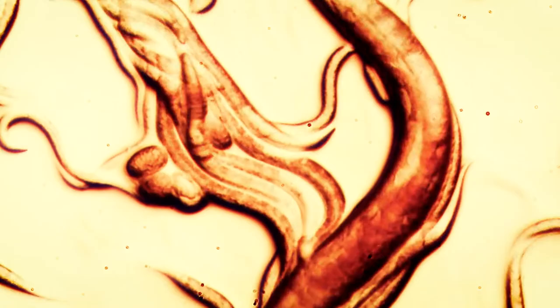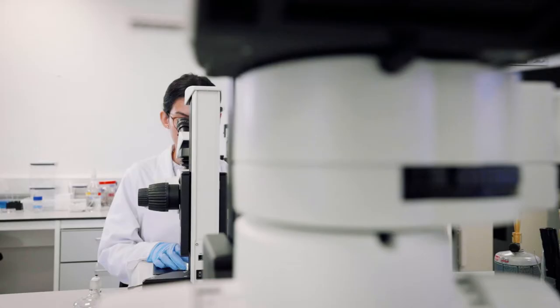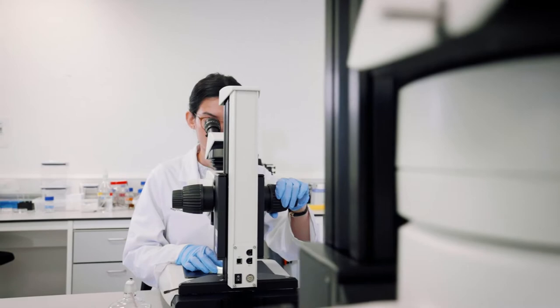C. elegans is a very tiny worm - it's one millimeter long - but it has a lot of the biology that you find in humans, and we can use it as a very quick model to test things in the whole organism that allows us to understand whether compounds or other interventions are more likely to work in humans.